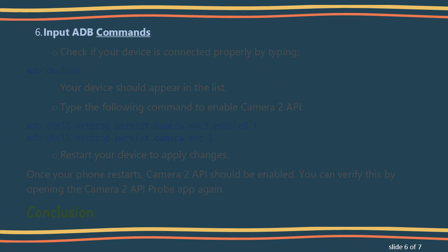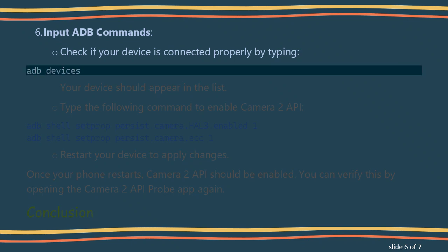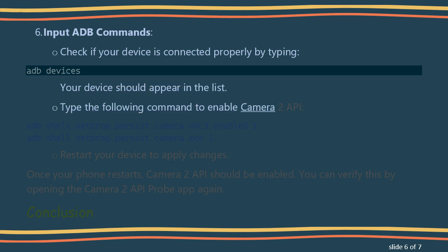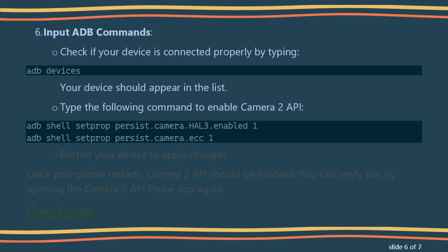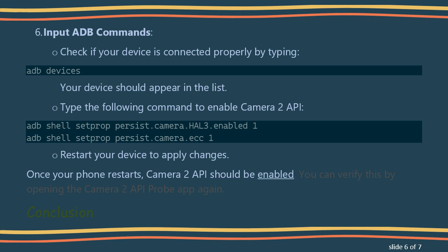Input ADB commands. Check if your device is connected properly by typing the ADB devices command — your device should appear in the list. Then type the following command to enable Camera 2 API. Restart your device to apply changes. Once your phone restarts, Camera 2 API should be enabled. You can verify this by opening the Camera 2 API probe app again.